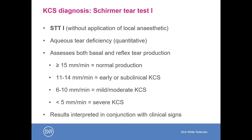These results should always be interpreted in conjunction with clinical signs and other patient factors. For example, is the dog otherwise ill, which could explain a transient reduction in tear production? Or is it receiving any medications which could be reducing tear production — for example, has it received any sedatives or had a recent anaesthetic?